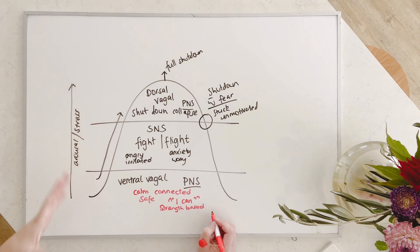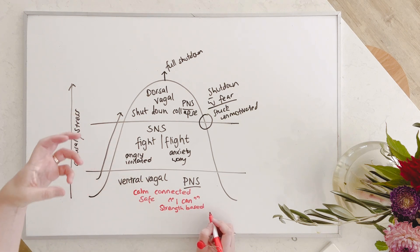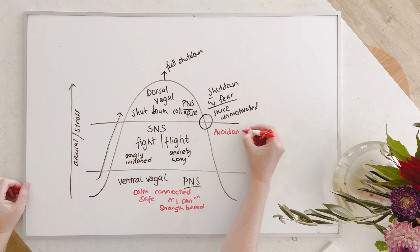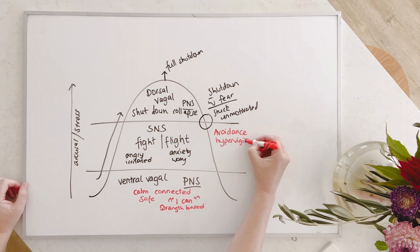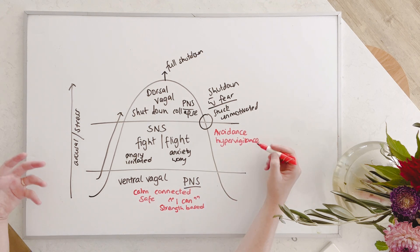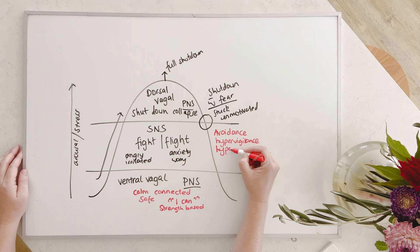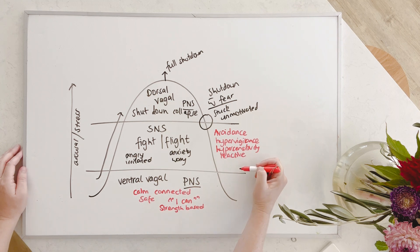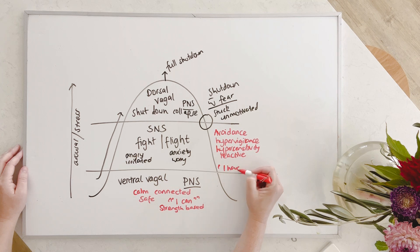As we come up into sympathetic nervous system, you'll notice other things begin to shift. So you might notice your behaviors shift into things like avoidance, or hypervigilance. So that's that constant kind of scanning of your environment for danger, or maybe hypersensitivity. You'll probably feel more reactive. And your thoughts might move to something like, I have to, you know, I've got to do this, I have to, blah, blah, blah.